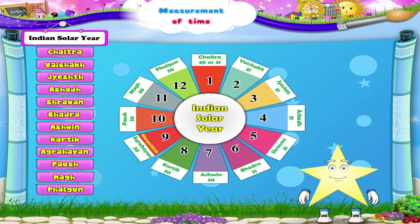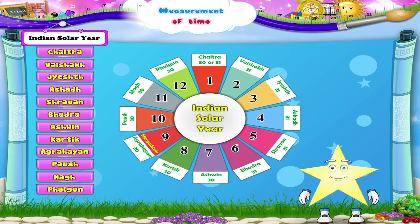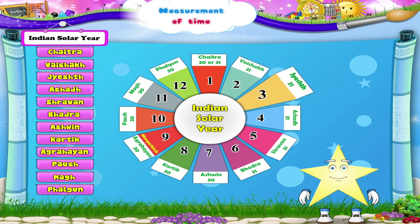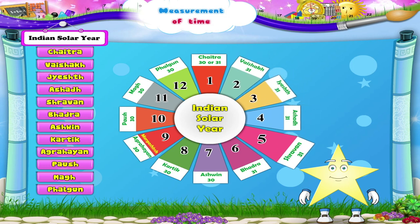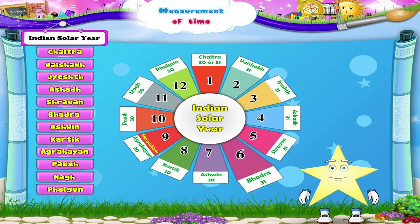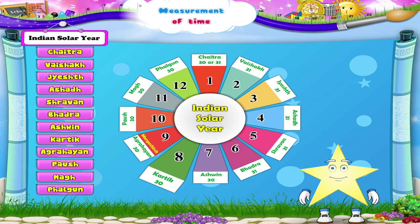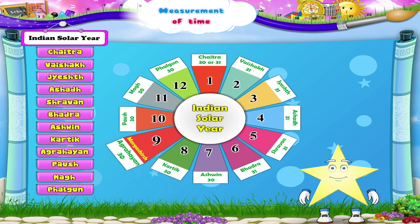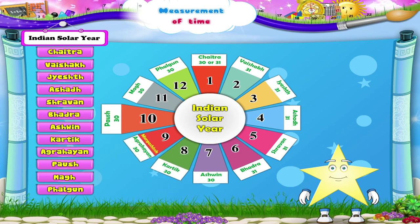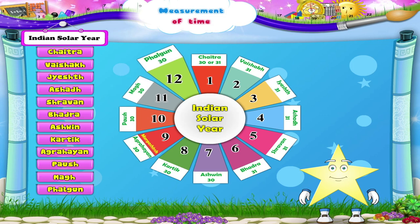Starry, are the names clear to you? Should we repeat them once again? Okay, let's start. Chaitra, Vaishak, Jesht, Aashad, Shravan, Bhadra, Ashwin, Kartik, Marghashirsh, Posh, Maagh, Falgun.